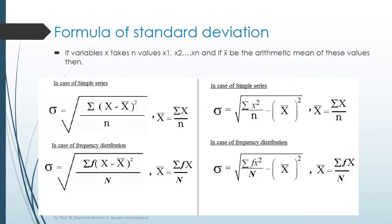Let's see the formula for standard deviation. There are a set of formulas. In this slide, I have discussed two sets of formulas. If the variable x takes n values x1, x2, up to xn, and x-bar is the arithmetic mean of these values, then for simple series, standard deviation equals the square root of sigma(x minus x-bar) squared divided by n, where x-bar equals sigma(x) divided by n. The small n is used because in a simple series you have no frequencies, so you count the number of observations.